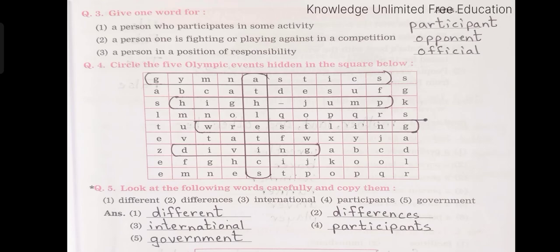Question number 3: Give one word for. First: A person who participates in some activity — participant. Second: A person who is fighting or playing against in a competition — opponent. Third: A person in a position of responsibility — official. Question number 4: Circle the five Olympic events hidden in the square below. The events are gymnastics, high jump, wrestling, diving and athletics.